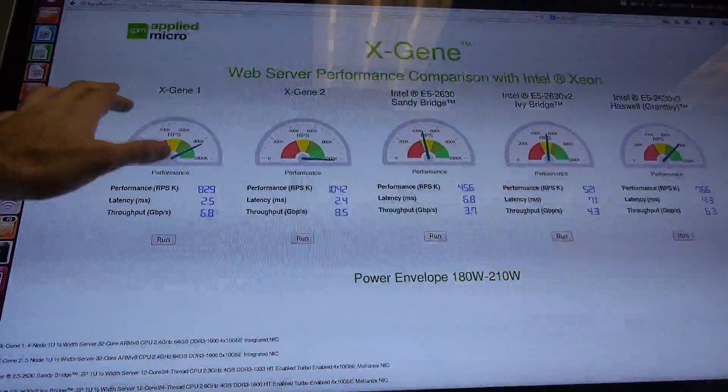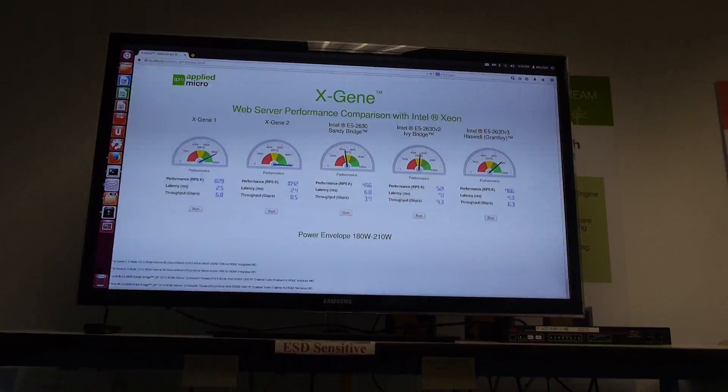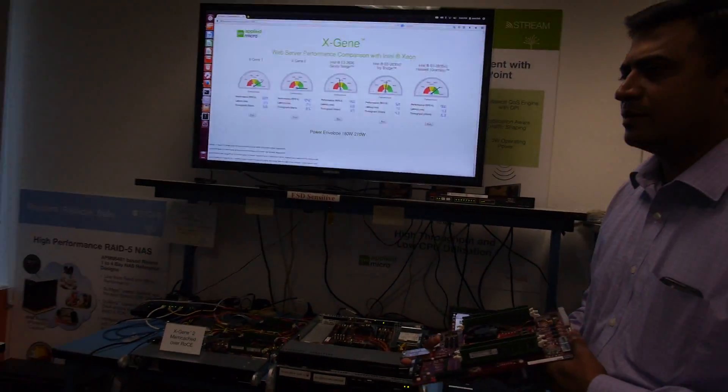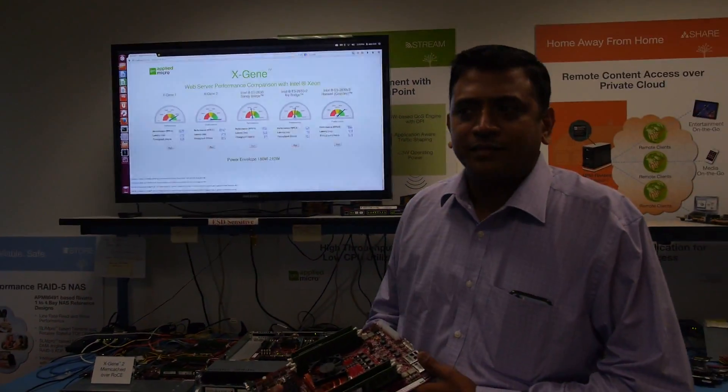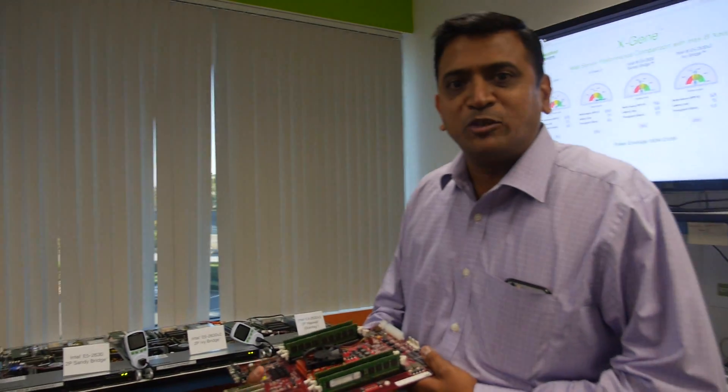So here you're showing that X-Gene 1 and 2 is much higher performance than the Intel servers. These are hooked up as a benchmark right here. These are running what's called the WRK benchmark, which is very similar to Apache Bench, where it measures web server performance when clients are sending requests to a web server, very similar to what a conventional web server run by Google, Yahoo, Bing, or any data center vendor would do.